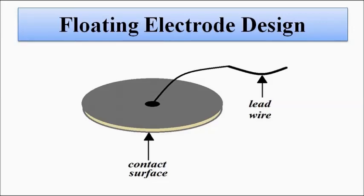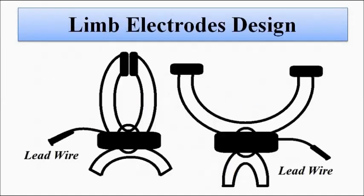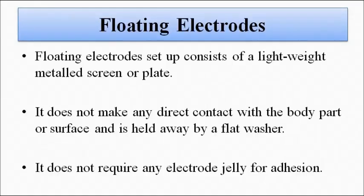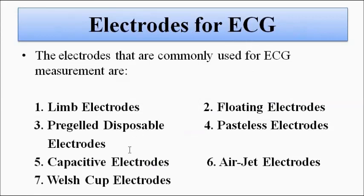So we have discussed the two types of electrodes used for measurement of electrocardiogram: first, the limb electrode, and second, the floating electrode. We'll discuss the other electrode types in separate videos. I hope you liked this video — please subscribe to Engineering Tutorial for more videos related to electrical, electronics, instrumentation, and communication engineering. Thank you very much.